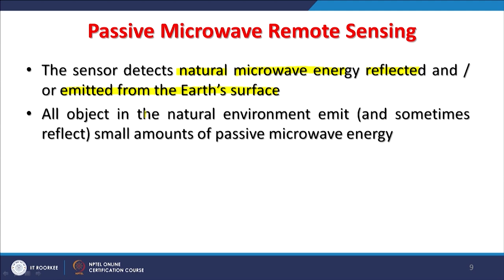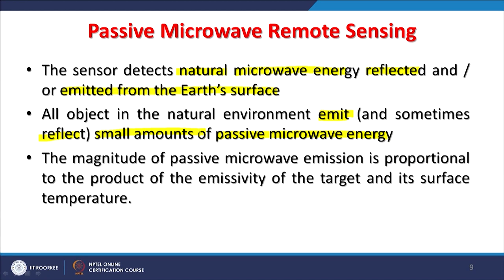All objects in the natural environment emit not only in the thermal infrared part of the EM spectrum, but also in the microwave region. Sometimes they also reflect energy depending on conditions, but in very small amounts. This very tiny amount of passive microwave energy that is emitted or reflected by natural objects necessitates a large IFOV, and consequently you end up with very coarse resolution images or data.